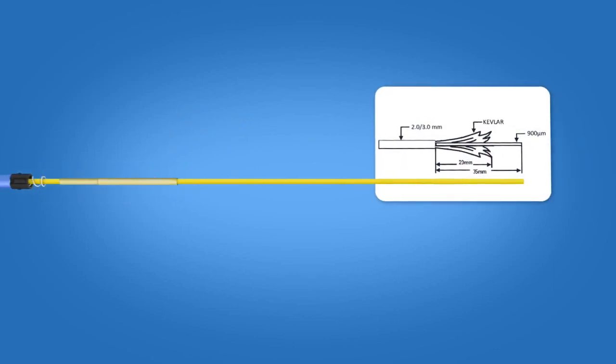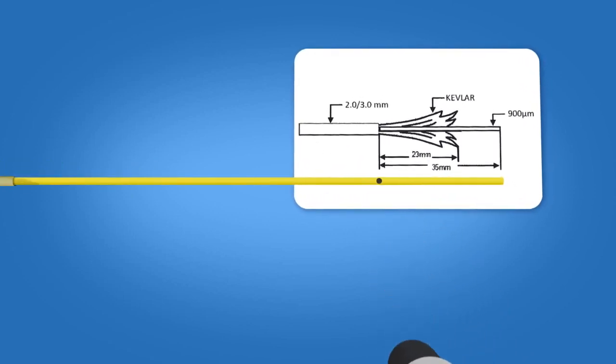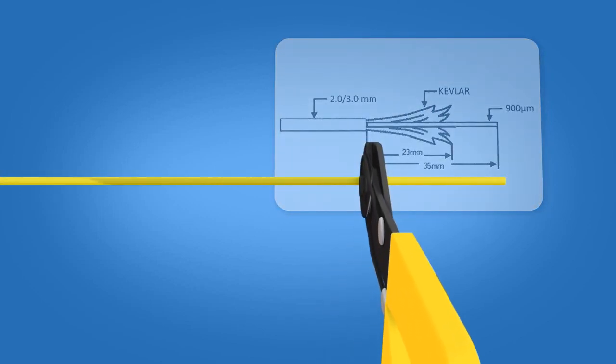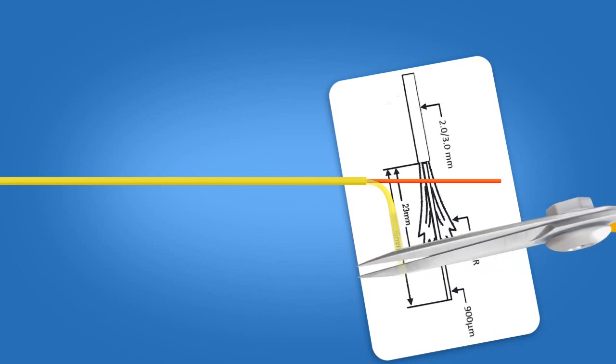Using the template on the front of the connector packaging, mark the cable at 35 mm from the end of the cable. Strip 35 mm of 3 mm jacket from the cable exposing the Kevlar and 900 micron fiber. Cut the Kevlar to a length of precisely 23 mm.